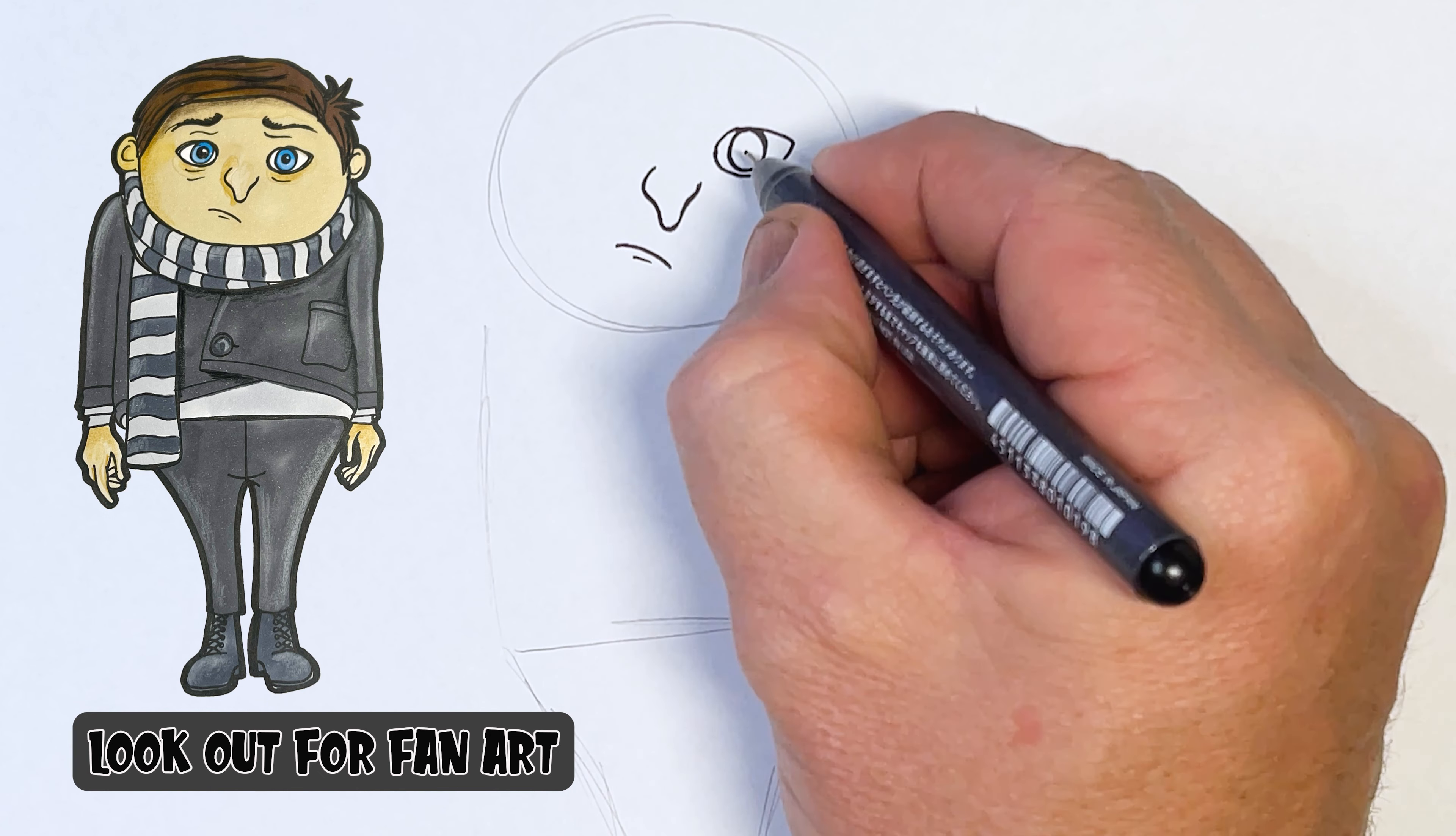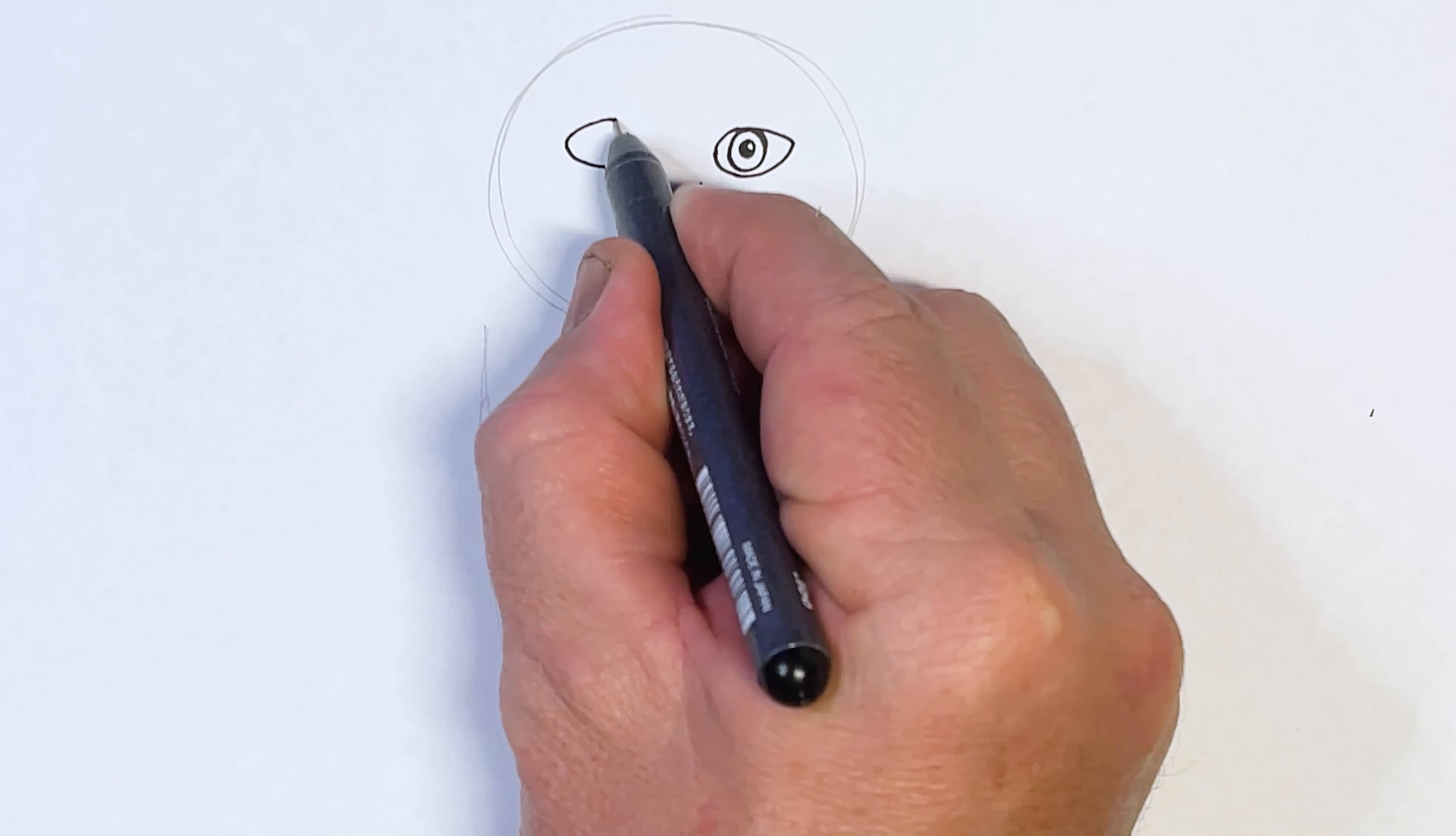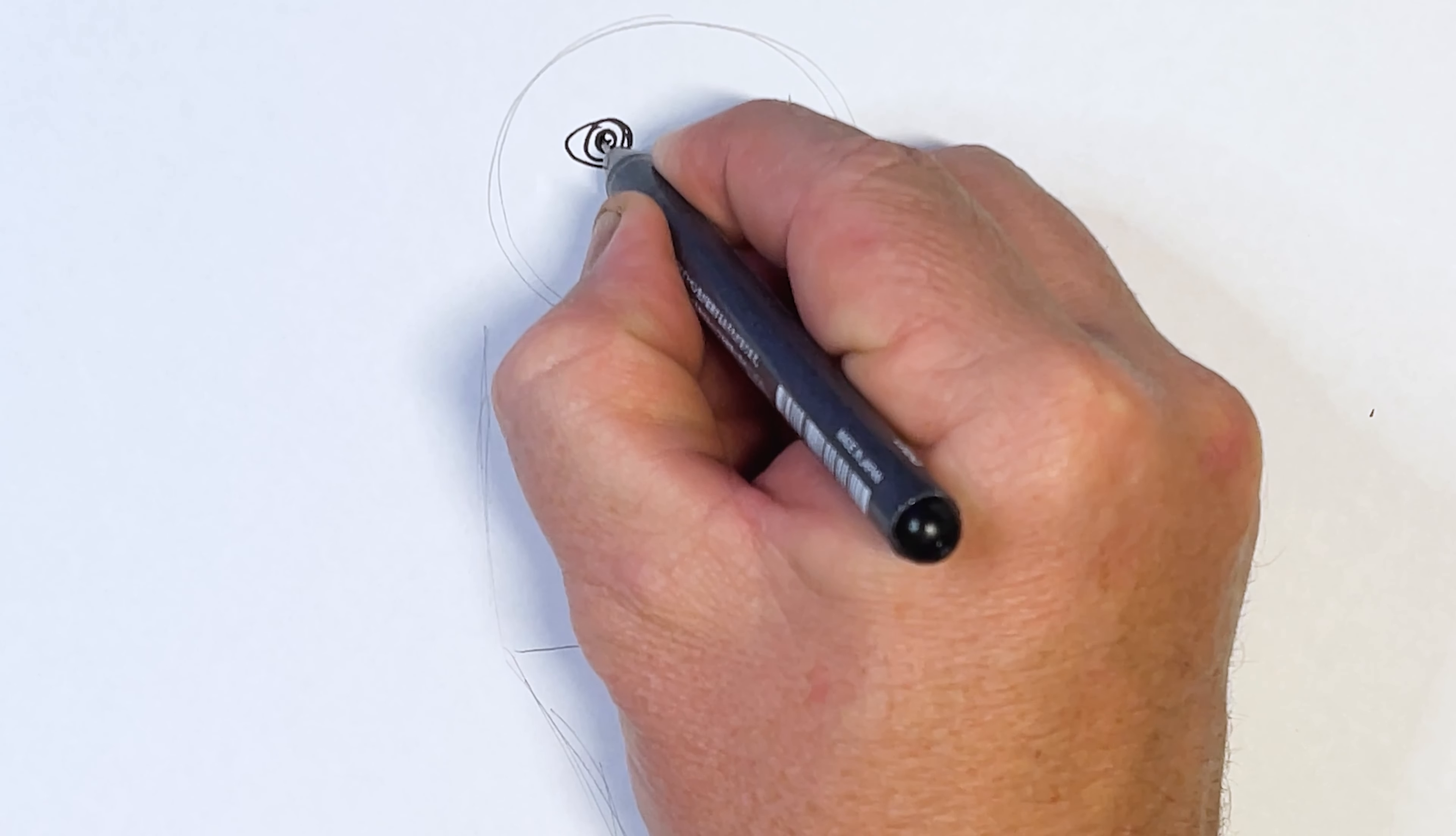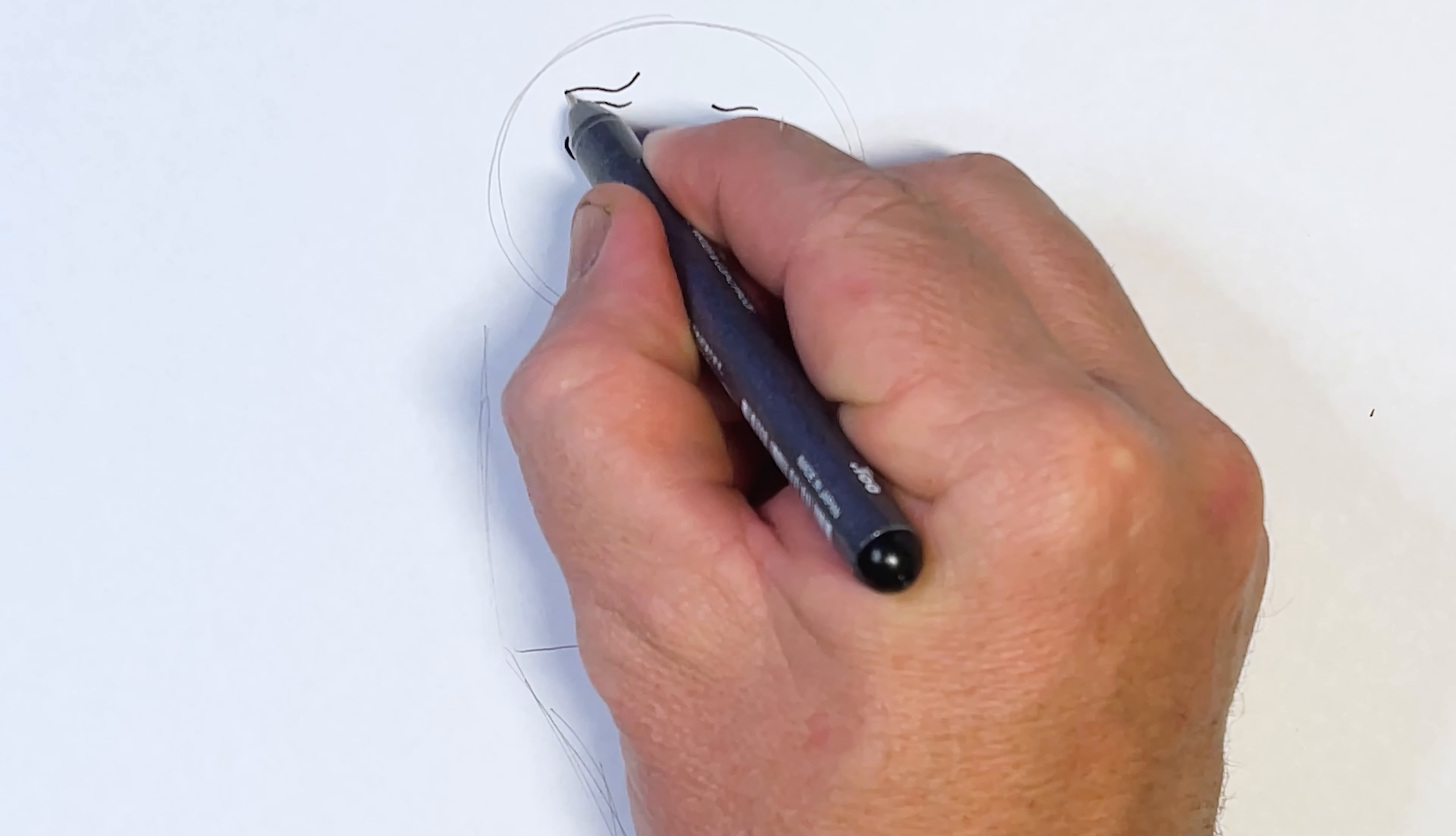And then inside that circle is another circle and I'm just going to leave a little white dot there. On the other side we're going to do the same, same sort of shape with a circle inside and then another little circle with the white dot. Now we've got a little line that comes like so. He's looking a little bit worried.